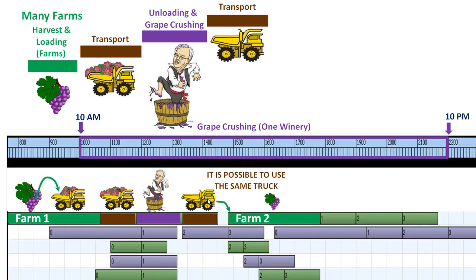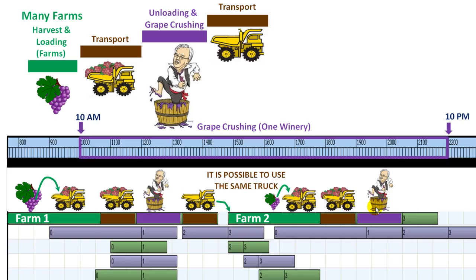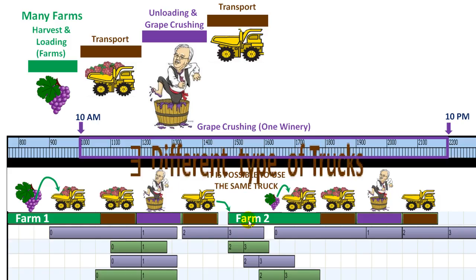Then you can use the same truck to go, not back to farm one, but to another farm — let's say farm two. At farm two, you have the activity of harvest and loading, then transport to the winery, unloading and grape crushing, and finally the transport back to any of these farms.